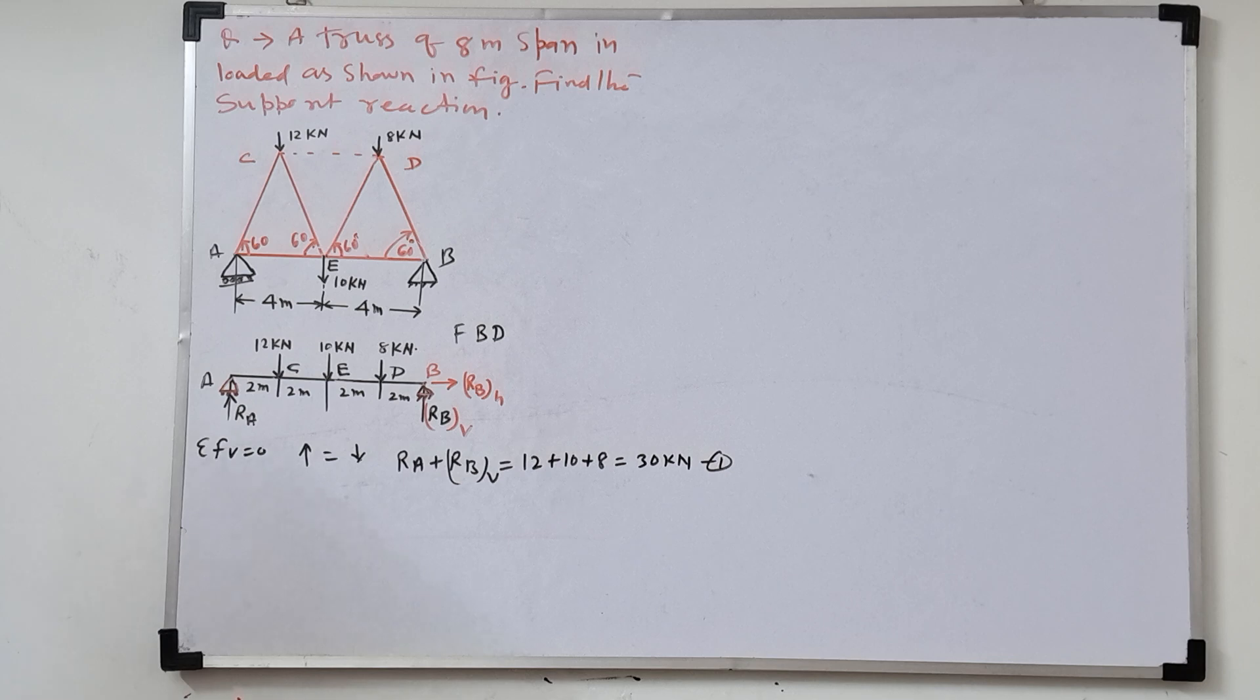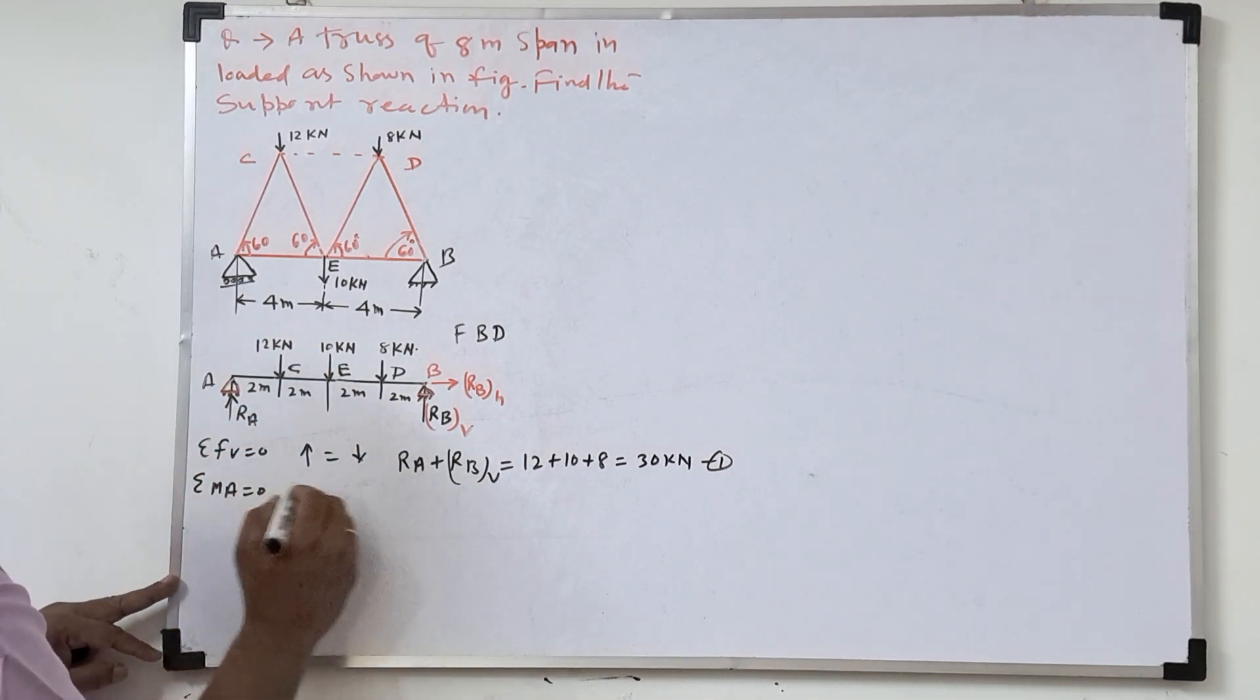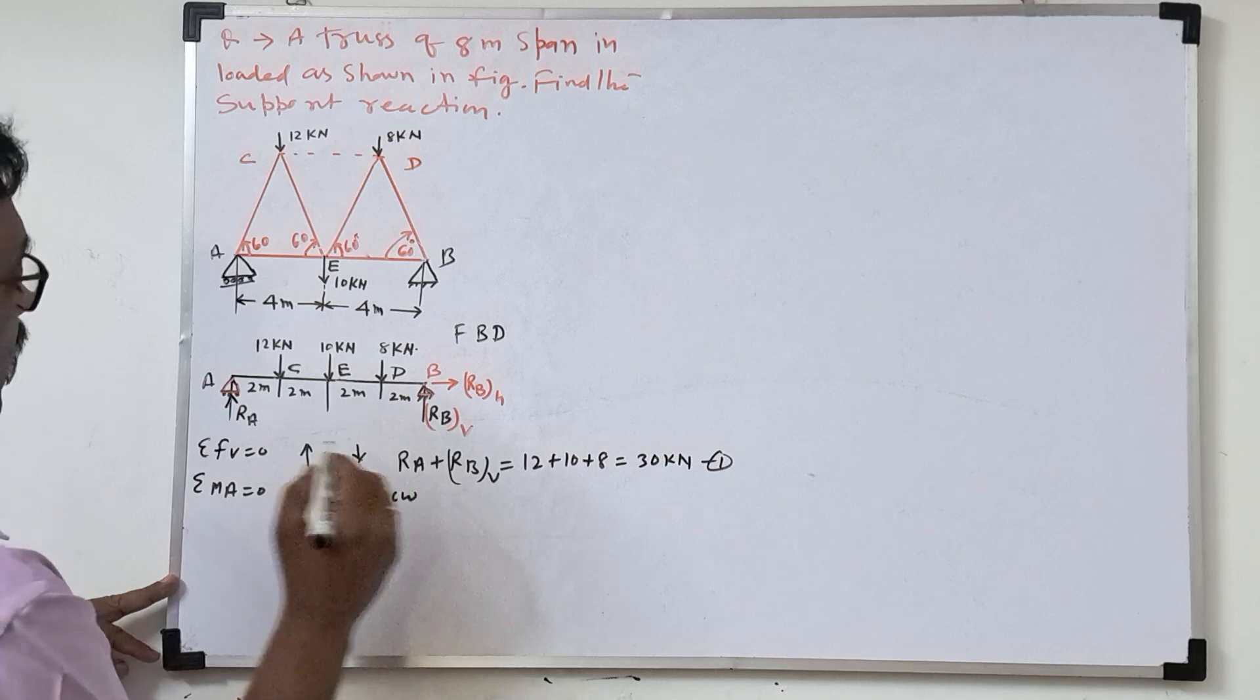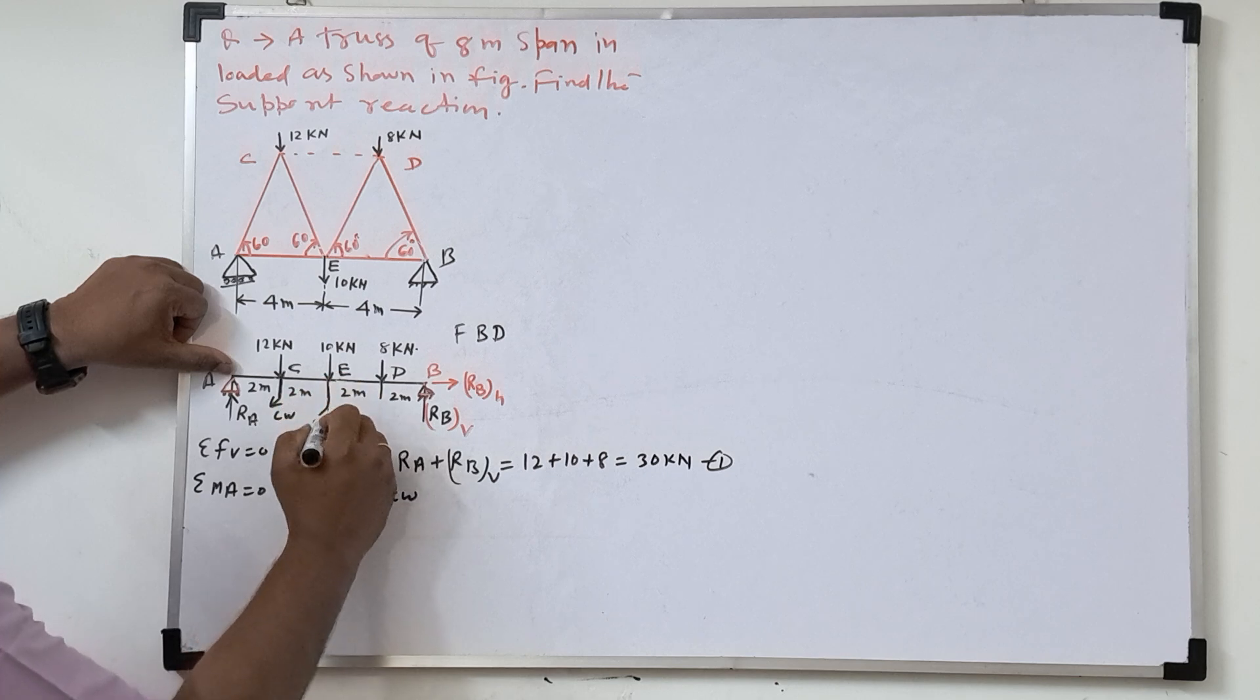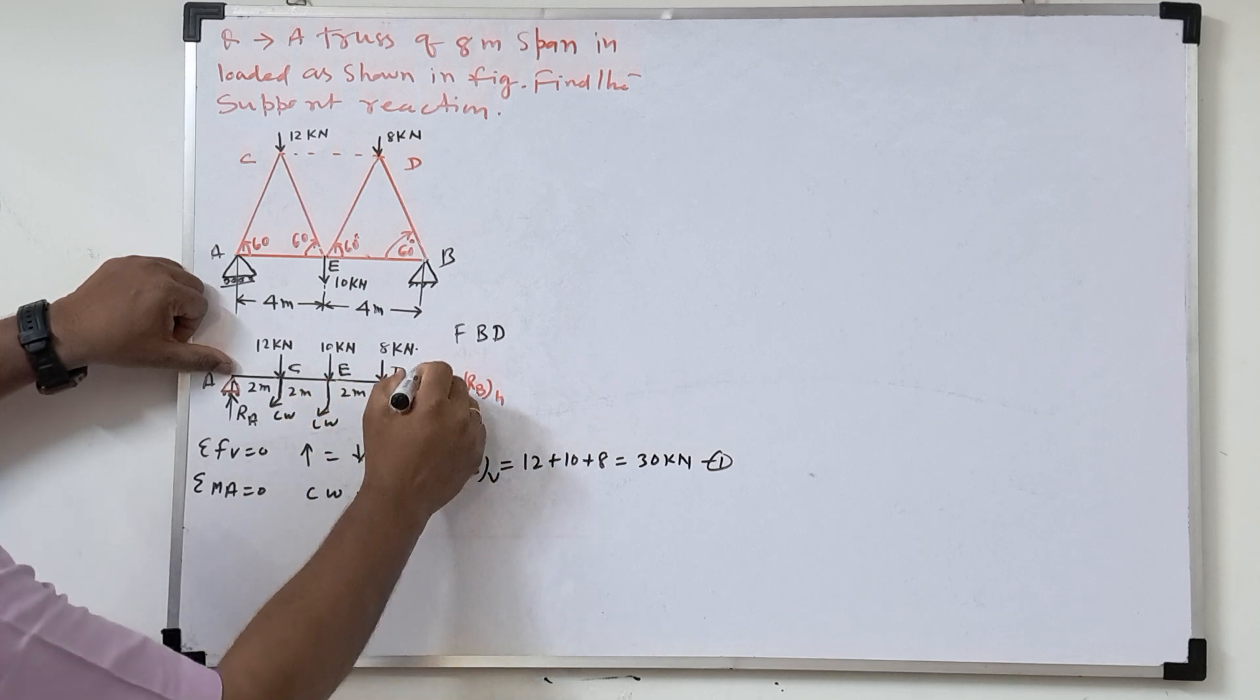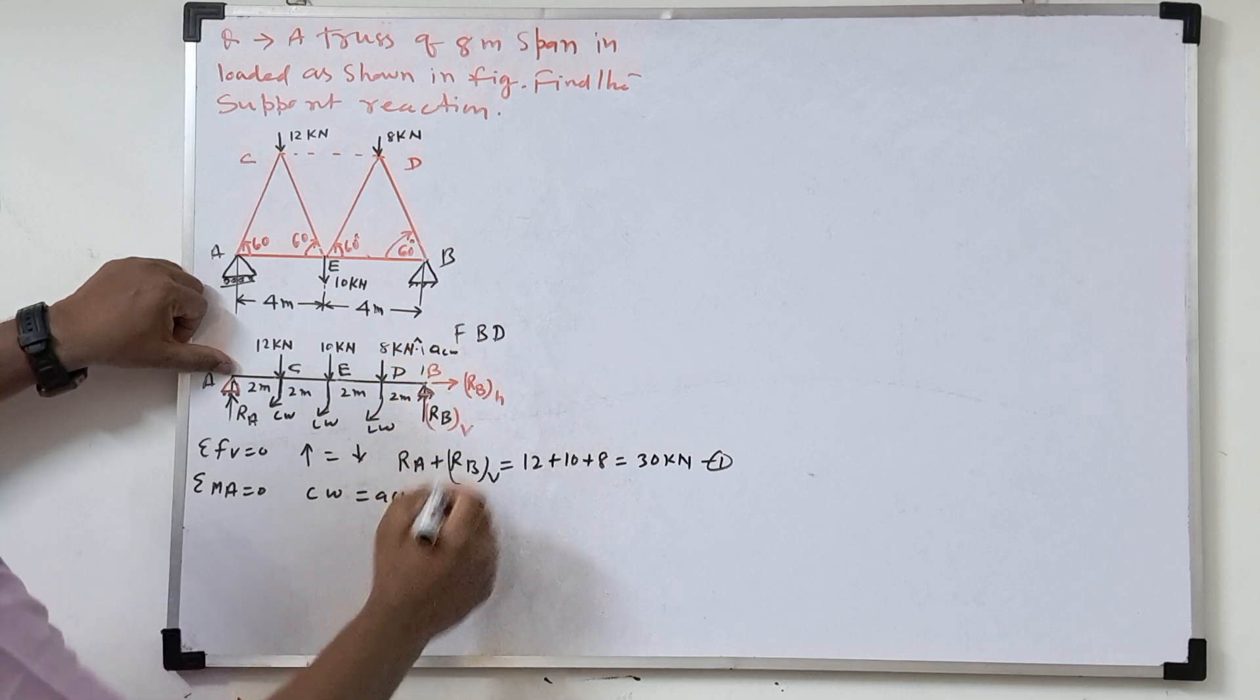Now we'll take the moment about A. Sigma M equal to 0. So here what we'll take? Total clockwise is equal to total anti-clockwise. So rotations you see, this rotation is clockwise, this rotation is clockwise, this rotation is clockwise and this rotation will be anti-clockwise.